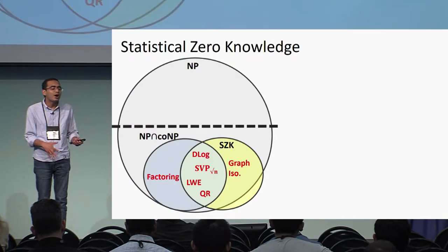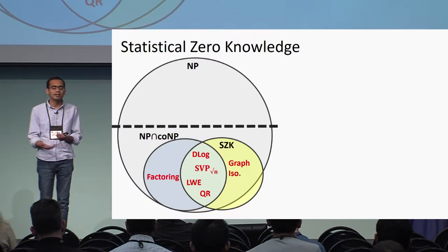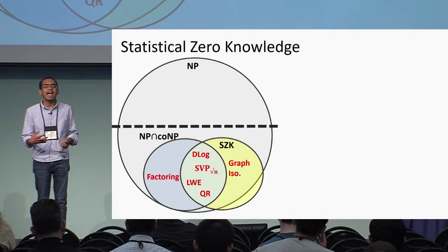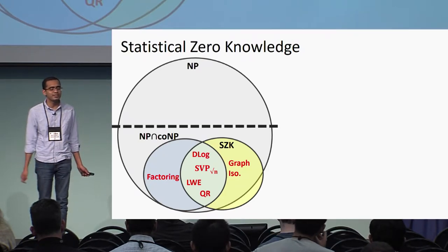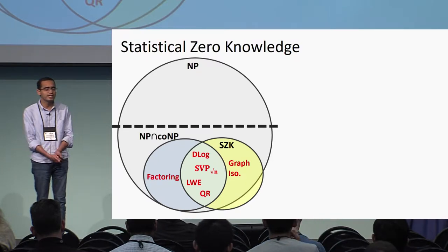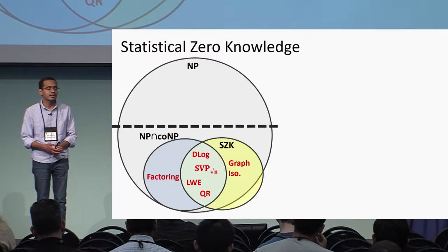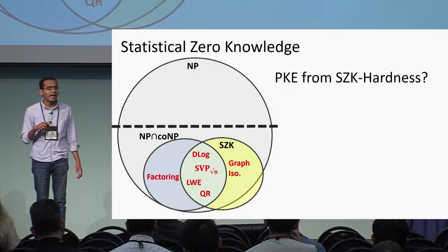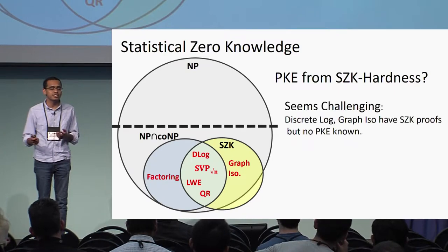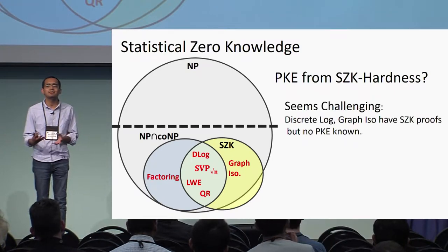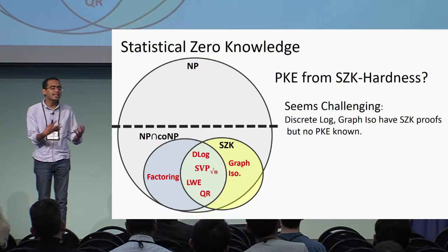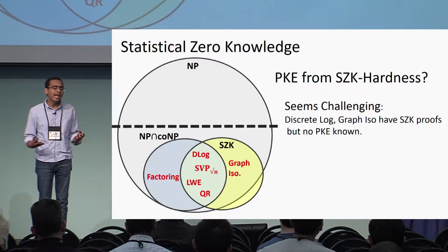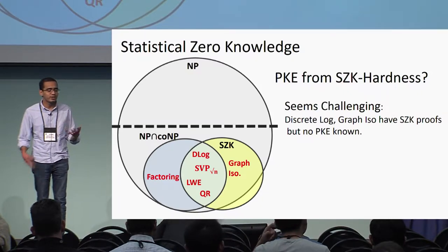As a reminder, this class is relatively small compared to NP — it's bigger than P, but relatively small. Interestingly, it contains many of the problems which give public key encryption — for example, LWE, quadratic residuosity, and so on. So can we construct public key encryption from statistical zero knowledge? This seems challenging. One key reason is that the class also has problems like discrete log, which have been around for a really long time and we still don't know public key encryption based on these problems.